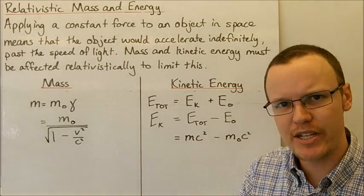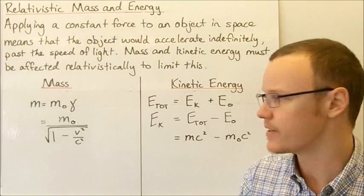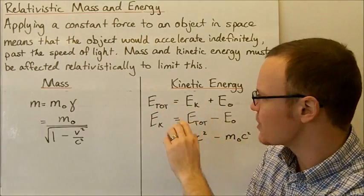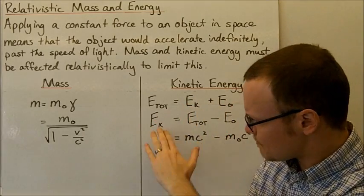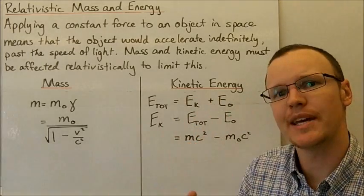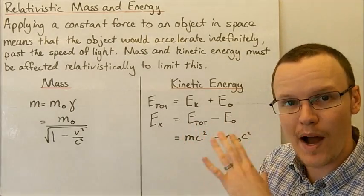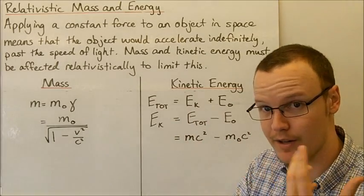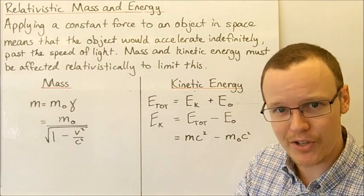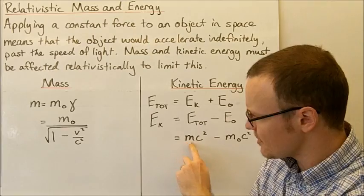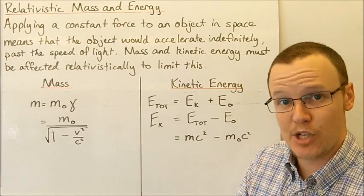Einstein said that the rest energy of any object is its mass multiplied by the speed of light squared — that's Einstein's energy-mass relation. If we manipulate this equation and subtract E₀, the rest energy, from both sides, the kinetic energy is the difference between the total energy an object possesses and its rest energy. The total energy is the mass times the speed of light squared, where this is the relativistic mass accounting for the velocity the object is travelling at.